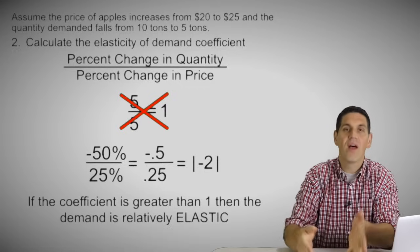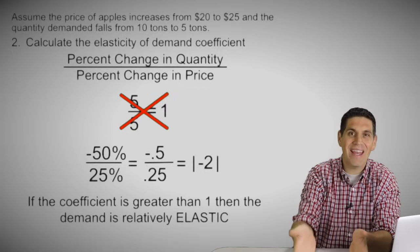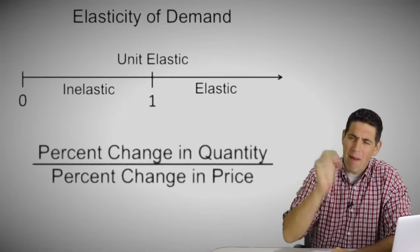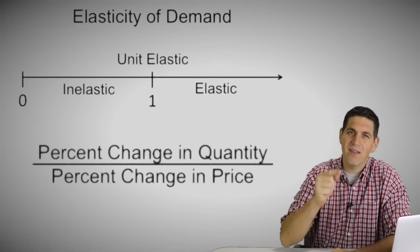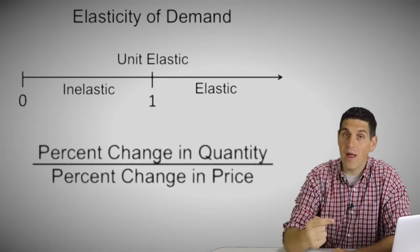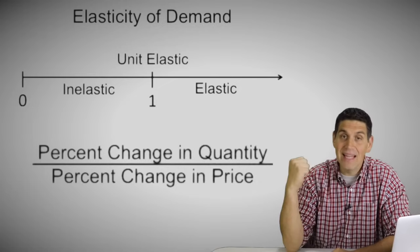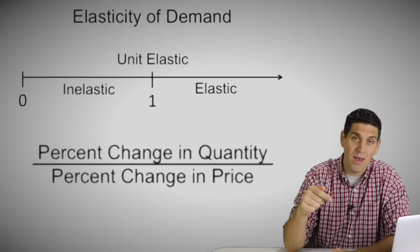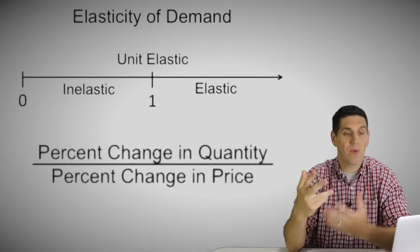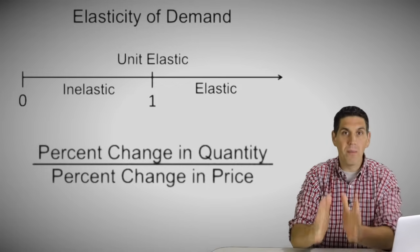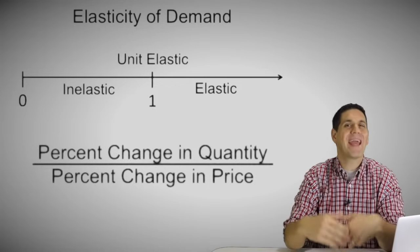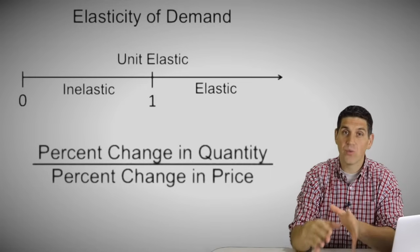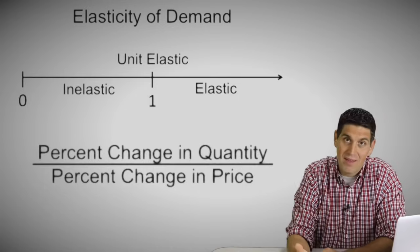Both the total revenue test and the elasticity of demand coefficient are telling us the same thing. If the elasticity of demand is greater than one, it's elastic demand. If it's one, it's unit elastic. And if it's less than one, it's inelastic. We use the absolute value because the elasticity of demand coefficient will always be negative due to the law of demand.